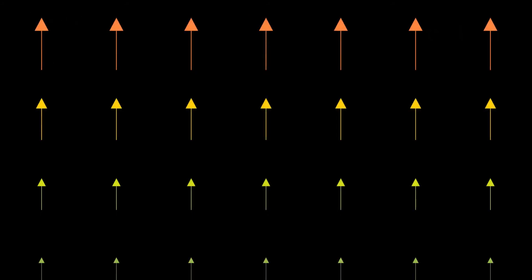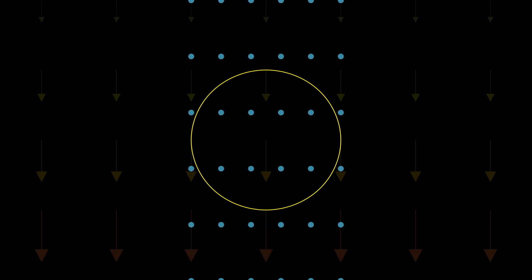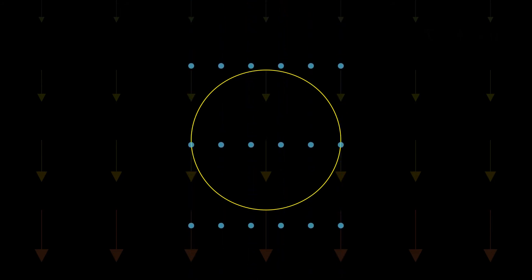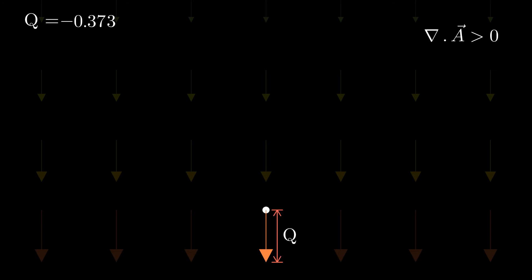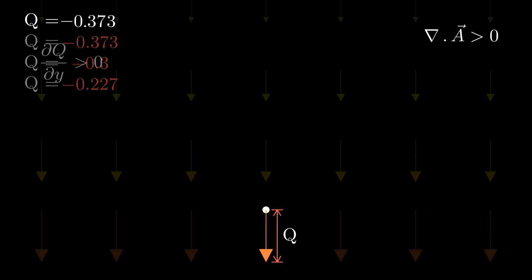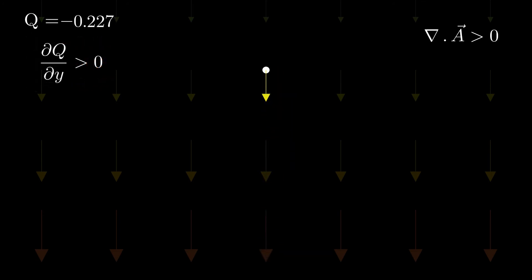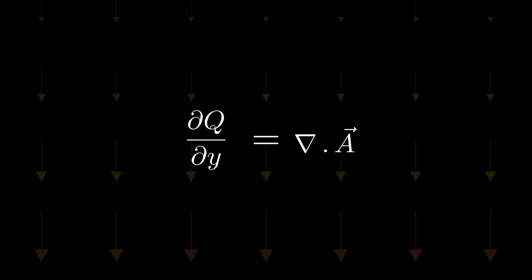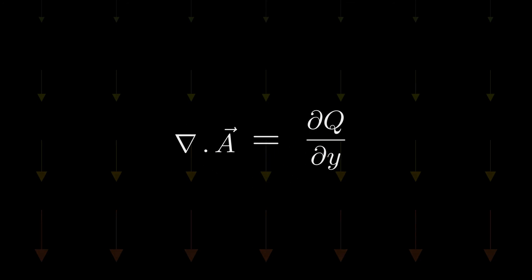Look at this very similar field. It can be noted that the q values become less negative, corresponding to a positive partial derivative of q with respect to y. Therefore, we can conclude that when the vector field contains only the y component, its divergence is given by the partial derivative of q with respect to y. If this number is negative, it implies that particles tend to flow towards the point rather than away from it.